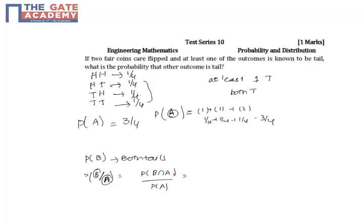So here having two tails is one by four, two tails is one by four by three by four, which is one by three.